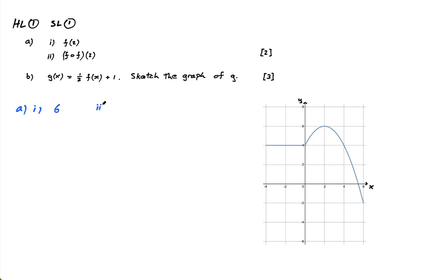And part II, f of f of 2. Well we know f of 2 is 6, so let me just write this down. f of f of 2 is equal to f of 6, because you know f of 2 is 6. So it's f of f of 2, which is f of 6, and that's the same thing. We go to 6 on the x-axis, find where the graph is. Well it's down here, so it has to be equal to negative 2.